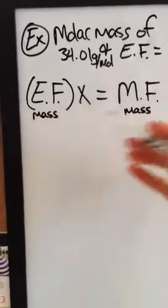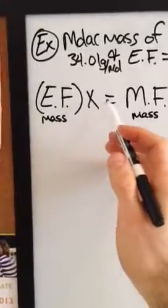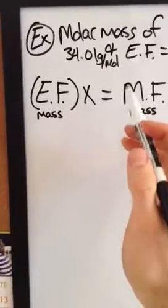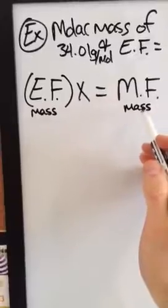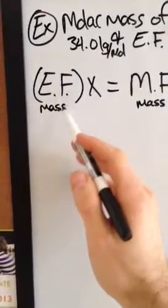You need to know there is an equation: X times EF equals MF. This is relevant for both the molecular formula mass and the empirical formula mass.